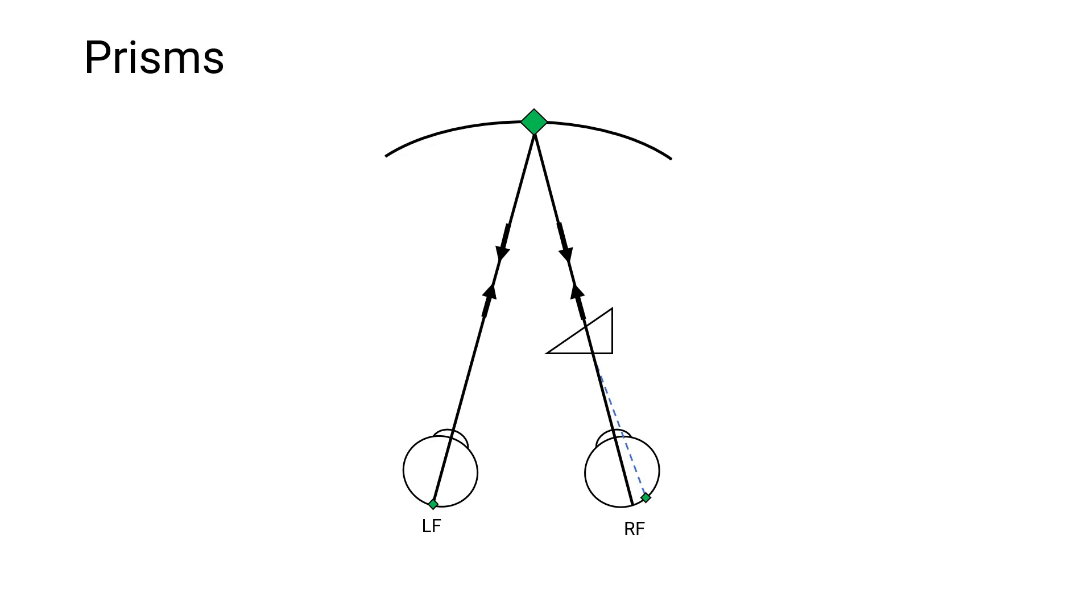Having this occur, though, means that the light now will stimulate a temporal point of the right eye whilst stimulating the fovea of the left eye. Now, these are non-corresponding retinal elements, so this will give rise to diplopia, and to overcome this, we need a motor fusion response.